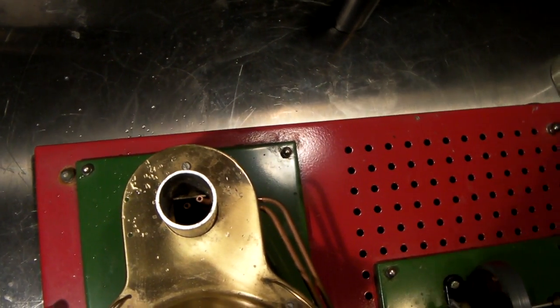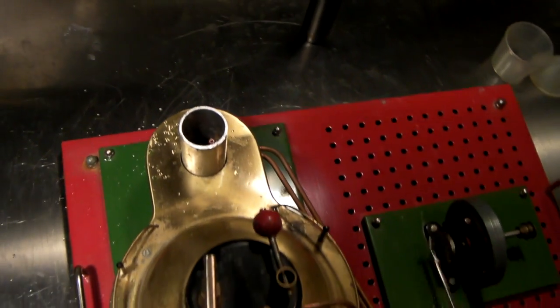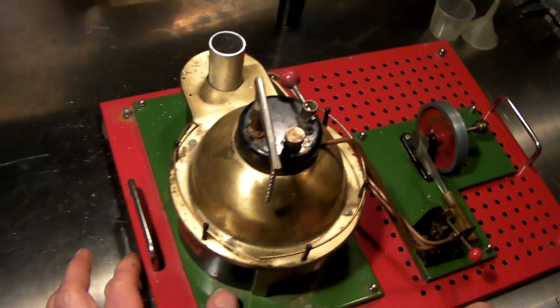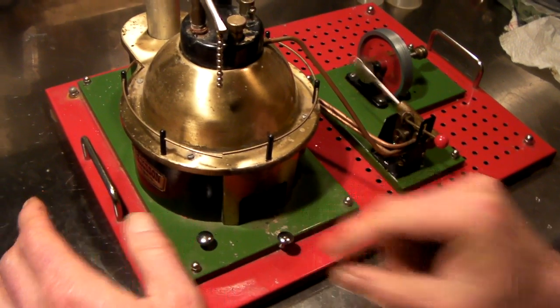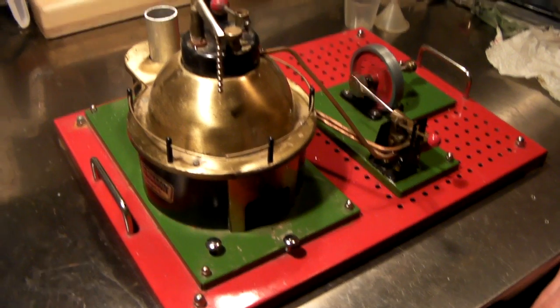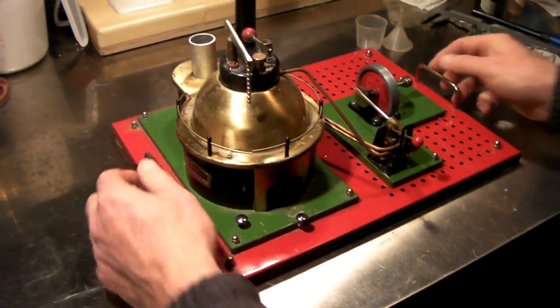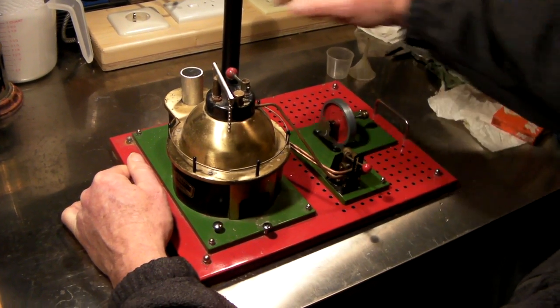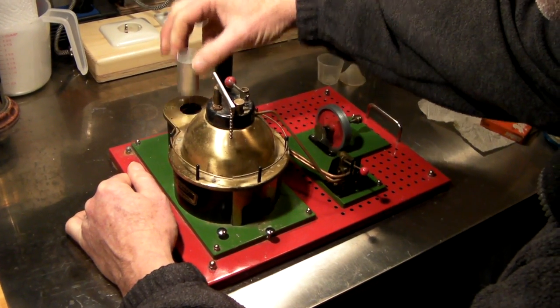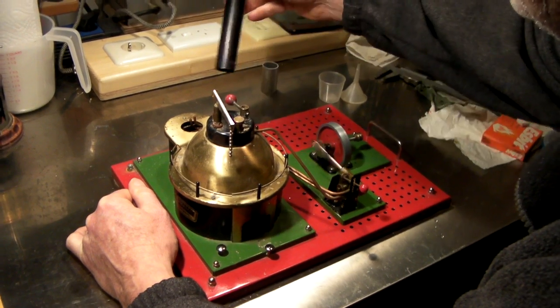We'll just take the fuel tray out and see how we're off for fuel. Press the safety button, pull him out. Still got a lot of fuel left. Put him back in, two nice handles, put his proper chimney back on.